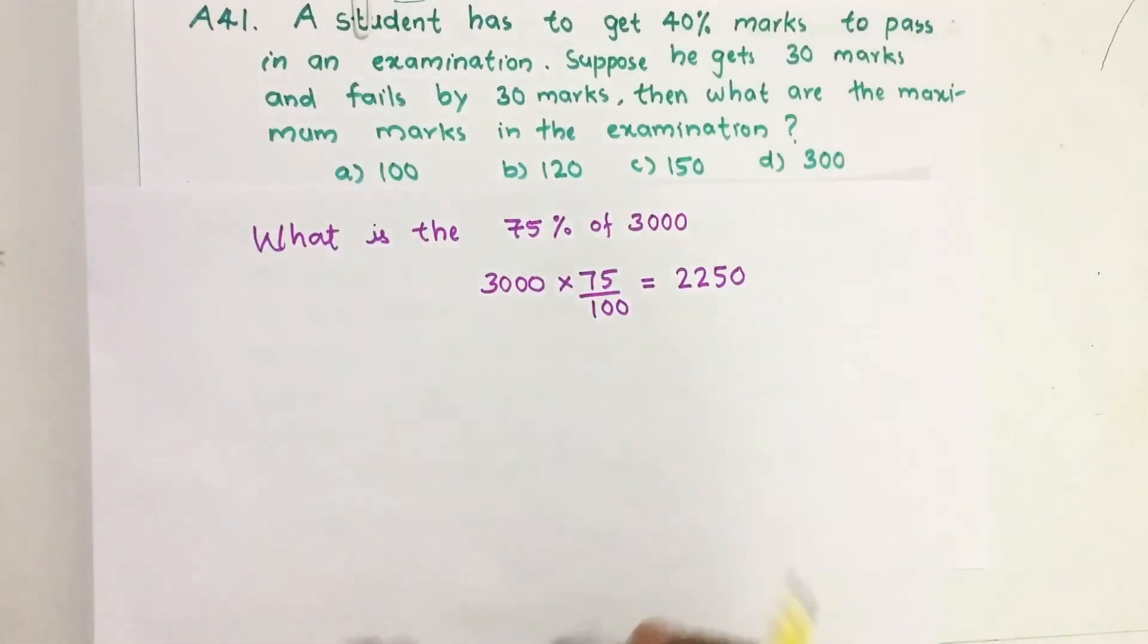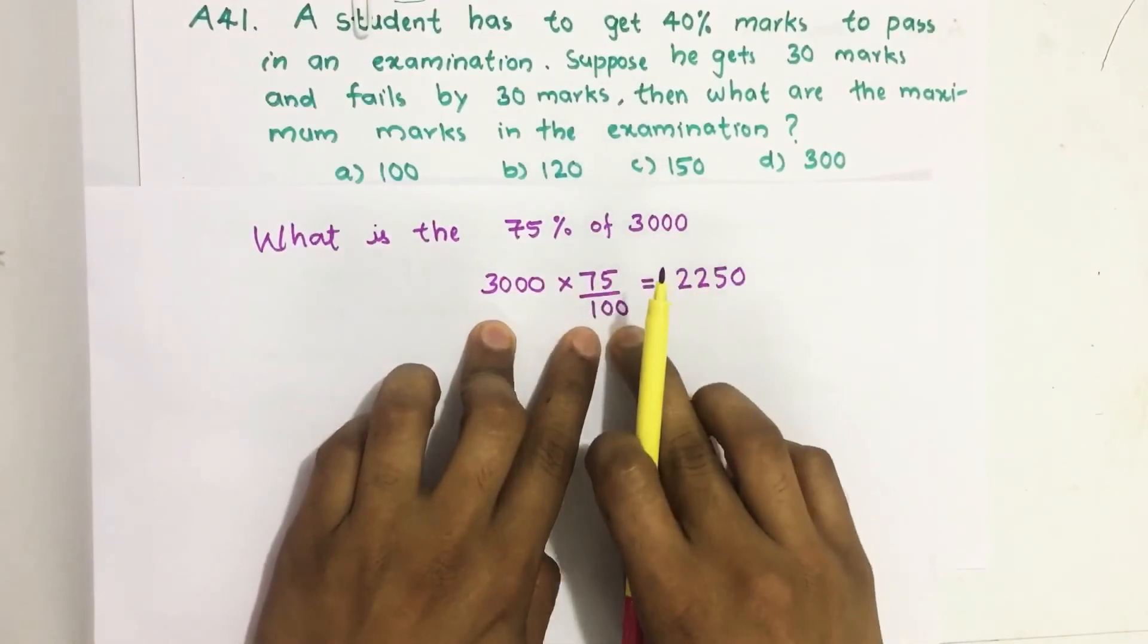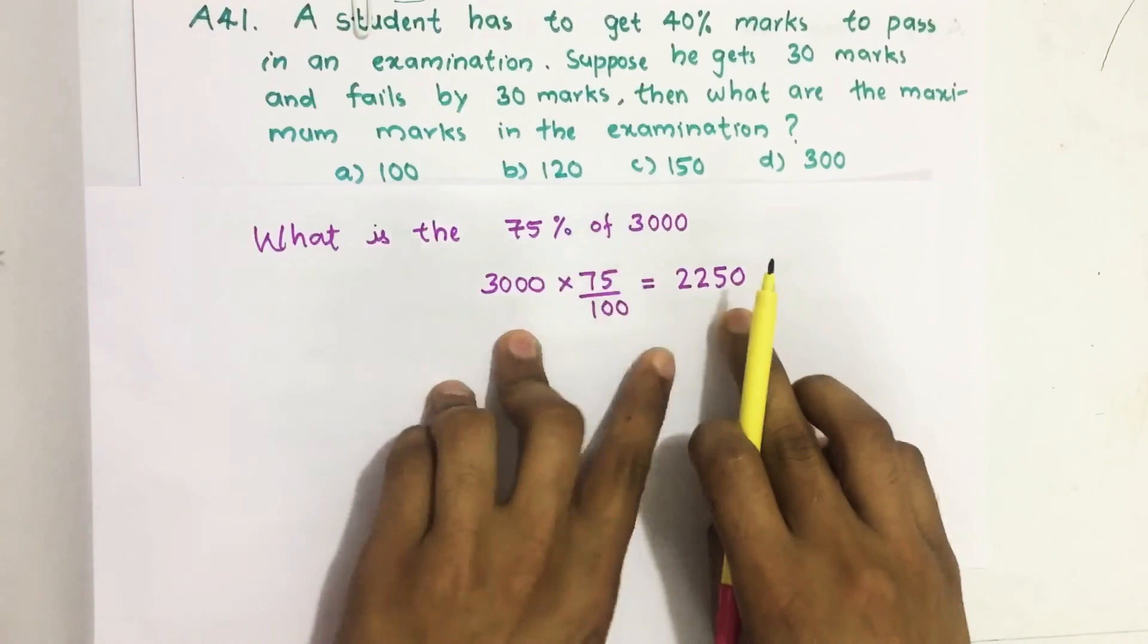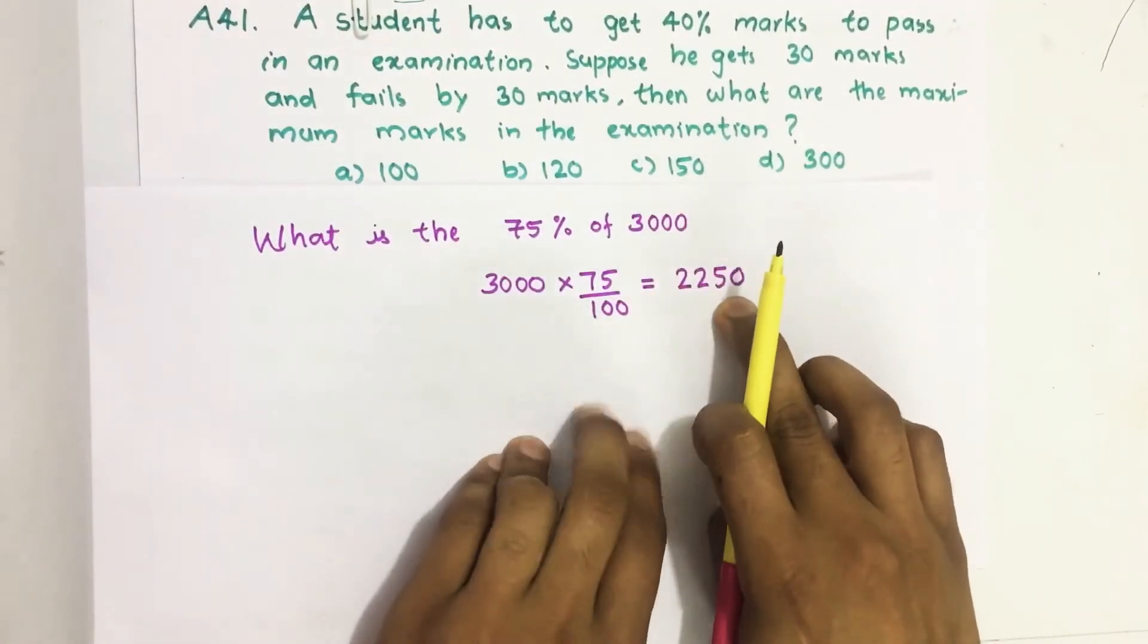How we find the percentage? 3000 into 75 divided by 100. This is how we find the percentage and we get 75 percentage of 3000 equal to 2250.